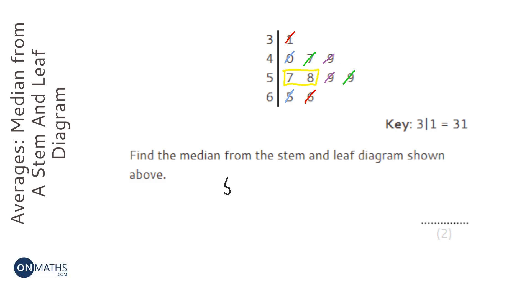So when that happens, you add them together and divide by two, or you can just find the halfway number. Now halfway between 57 and 58 is going to be 57.5.